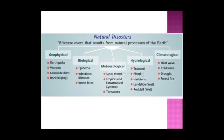Natural disasters can be classified into geophysical (earthquake, volcano, landslide, rockfall), meteorological (local storms, tropical and extra-tropical cyclones, tornadoes), hydrological (tsunami, flood, hailstorm, landslide — both dry and wet rockfall types), biological (infectious disease epidemics, insect bites — such as the Nipah virus cases in Kerala), and climatological (heat wave, cold wave, drought, forest fire). These are the main categories of natural disasters that result from natural processes of the earth.